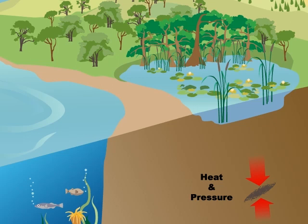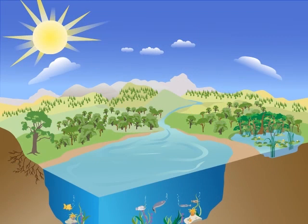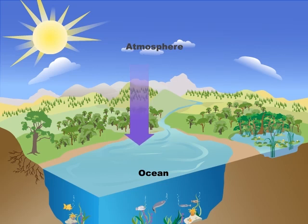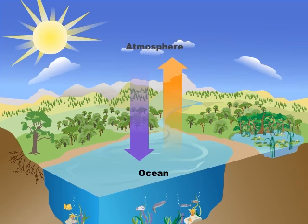These fossil fuels include coal, oil, and natural gas. The ocean also plays an important role in the carbon cycle. Ocean water absorbs carbon dioxide from the atmosphere, but also releases carbon dioxide back into the air.